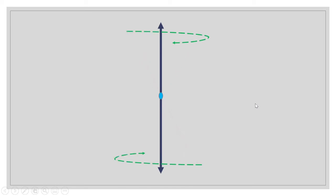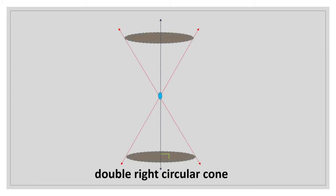Therefore, we can now generate our double right circular cone. A double right circular cone consists of two cones joined at a common point. This point is called the vertex, and this vertical line is called the axis.